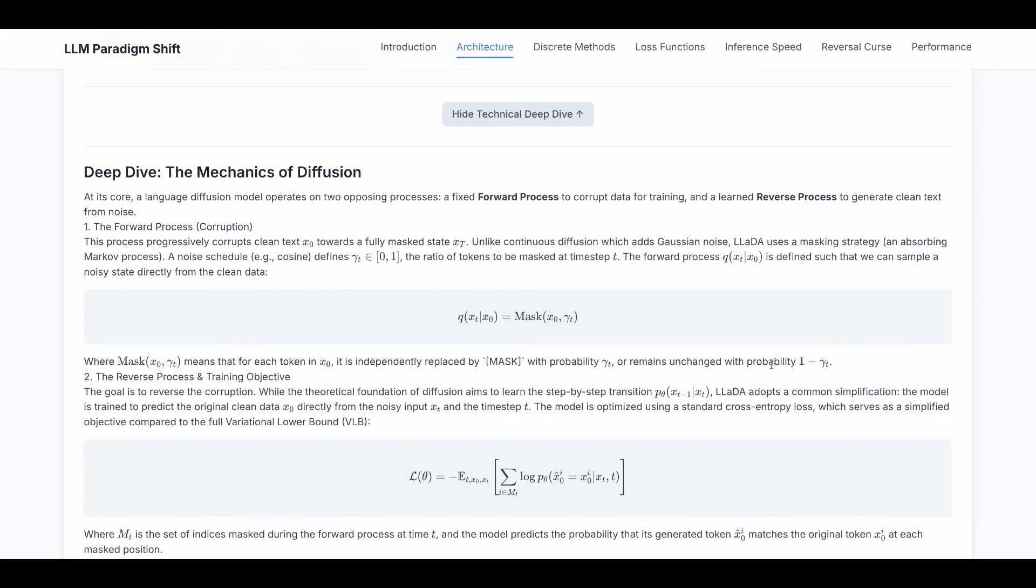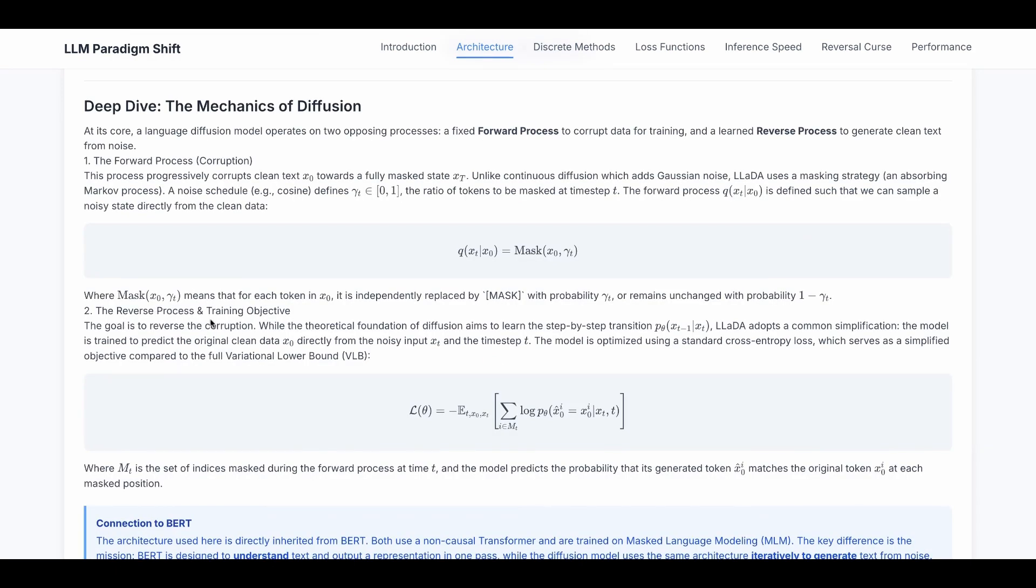Or remains unchanged with the probability of 1 minus gamma_t. Next is the reverse process. The goal is to reverse the corruption. The theoretical foundation of diffusion aims to learn the step-by-step transition p_theta(xt-1|xt).